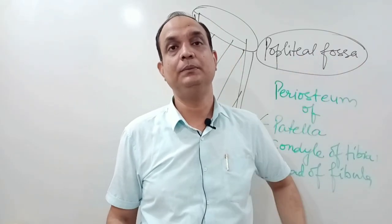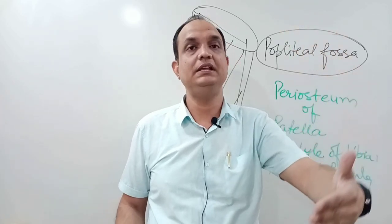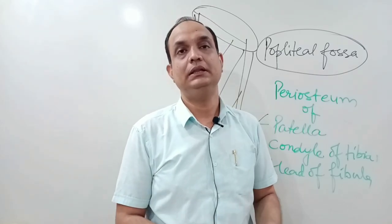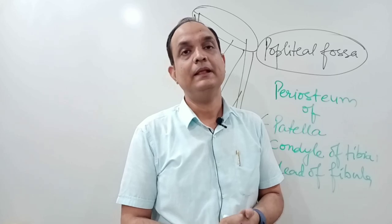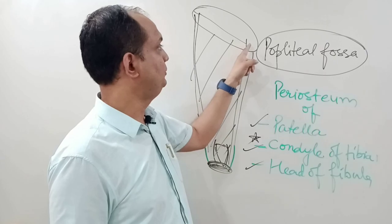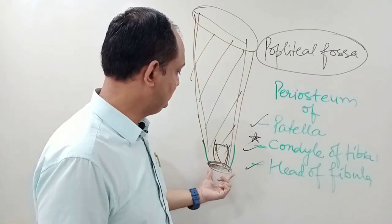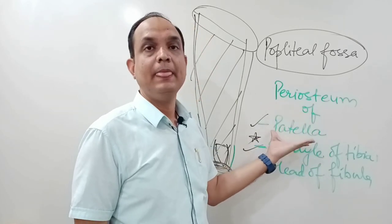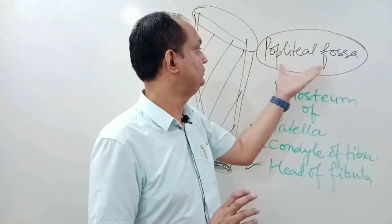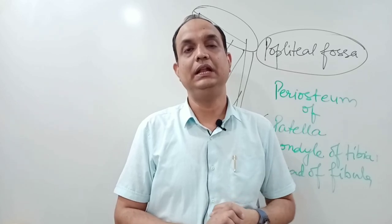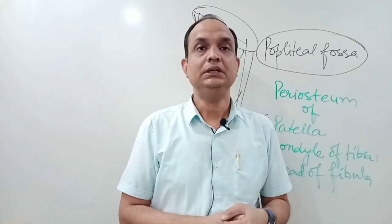If you are doing dissection on the posterior aspect of the thigh, you will realize that the fascia continues on the posterior side of the knee joint as the popliteal fascia, and then continues into the lower leg as fascia cruris. So the deep fascia starts as a ring at the pubic tubercle, wraps around the thigh, and at the knee merges anteriorly and laterally with the periosteum, while posteriorly it forms the popliteal fascia.